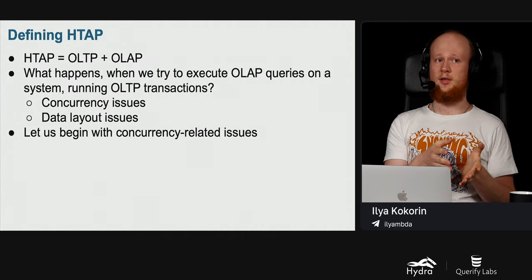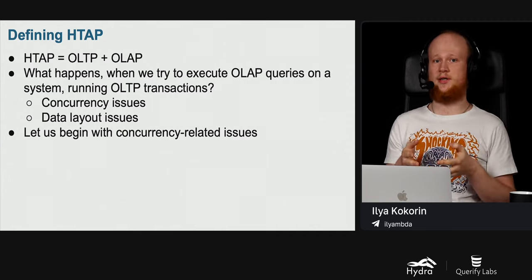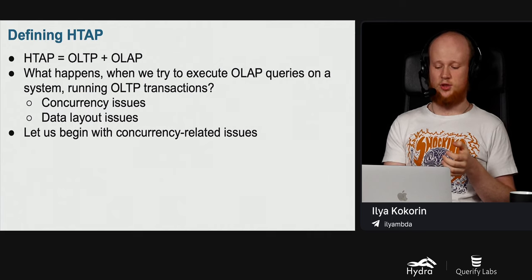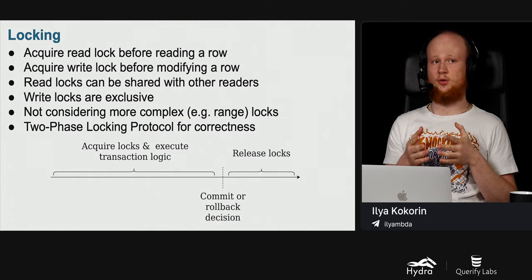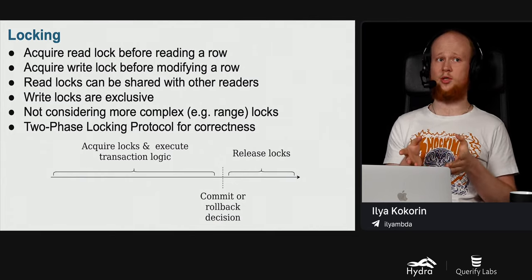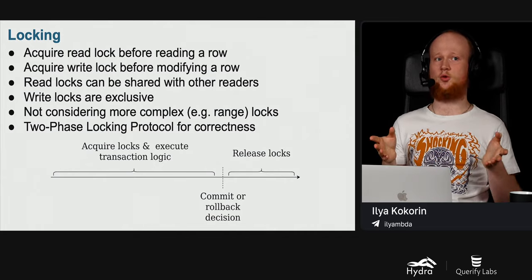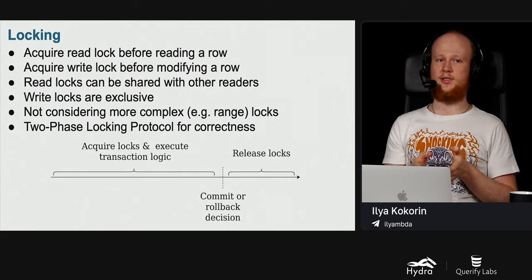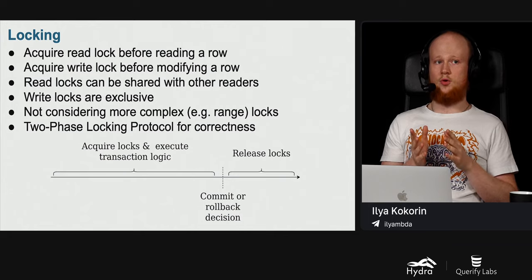Let us see what happens when we try to execute OLAP queries on a system running OLTP transactions. We may face two types of issues: concurrency issues and data layout issues. Let us begin with concurrency issues. In database concurrency control: before reading a row we acquire a read lock, before modifying a row we acquire a write lock. Read locks can be shared with other readers, but write locks are exclusive. Databases use a two-phase locking protocol to guarantee correctness of multiple concurrent transactions.